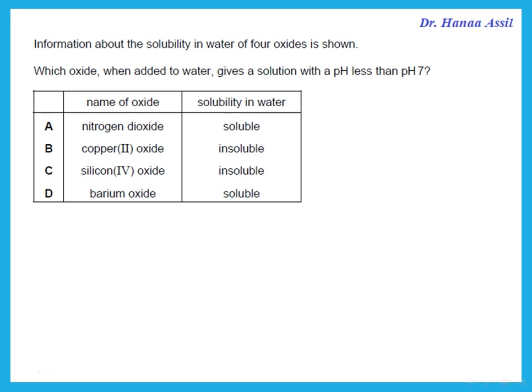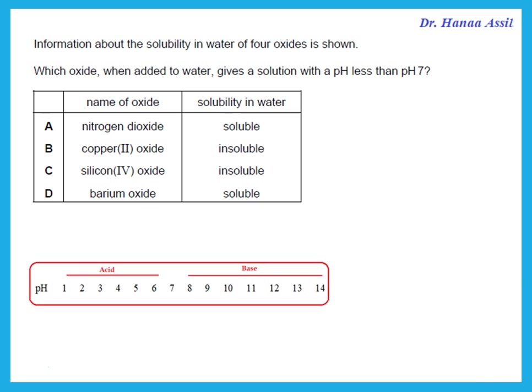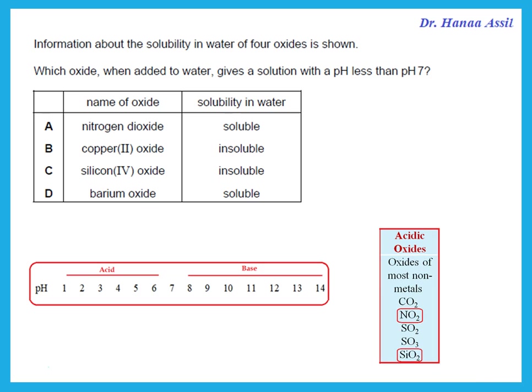Information about the solubility in water of four oxides is shown. Which oxide, when added to water, gives a solution with a pH less than 7? pH less than 7 is acidic. Acidic means oxide of a non-metal. Both nitrogen and silicon are non-metals, so both of those oxides are acidic. But since it must be soluble to give a solution, the answer is A.